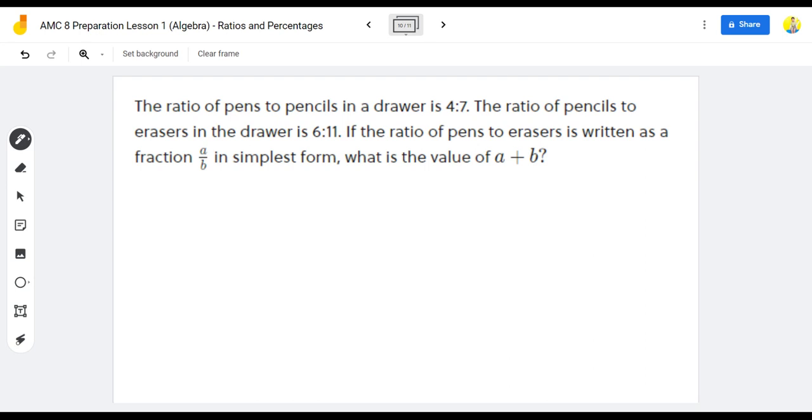So the ratio of 4 to 7 is the same as the ratio of 24 to 42, and the ratio of 6 to 11 is the same as the ratio of 42 to 77. We want to connect the two ratios and form one big ratio. So we find the least common multiple and set that as the middle value.